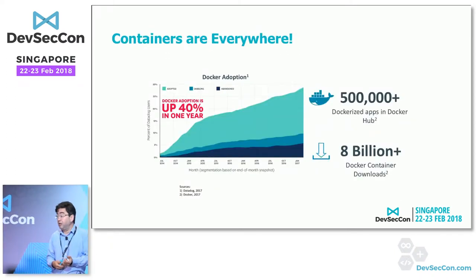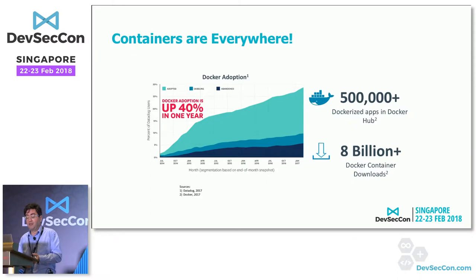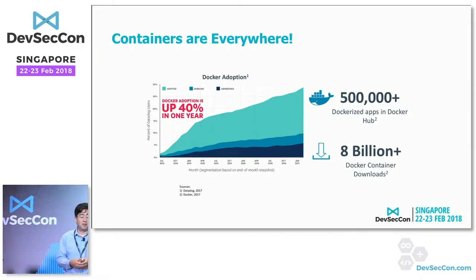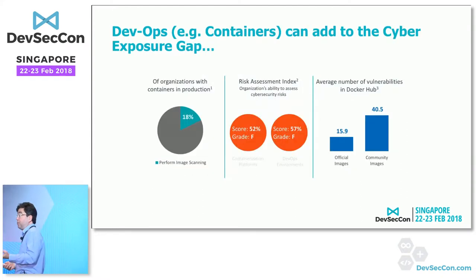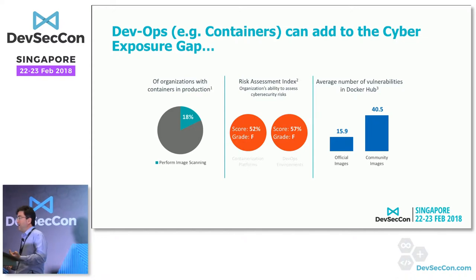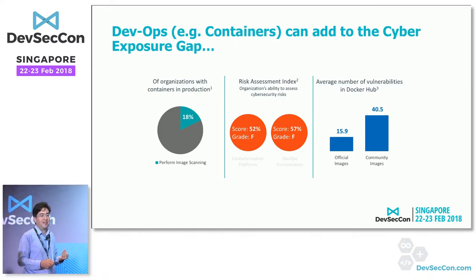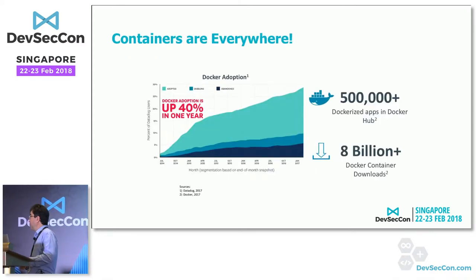Containerization is exploding — up 40% over last year, with 8 billion container downloads and half a million Dockerized applications in Docker Hub. And yet only 18% of organizations are actually looking at what's inside these containers to assess the risk they may impose.